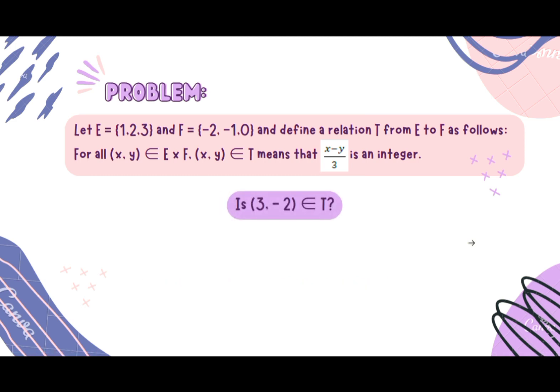Next, is ordered pair (3, -2) element of T? Again, substitute. We'll have 3 minus -2, which equals 5, then divide by 3.